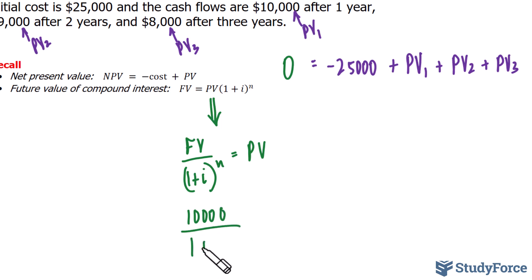Over 1 plus the interest rate is what we're looking for. That's the interest rate per period. And since the $10,000 is being received one year from today, the value of n, which represents the periods, is 1. We'll take this expression and substitute it in for PV1.